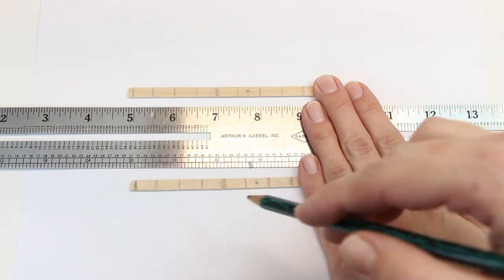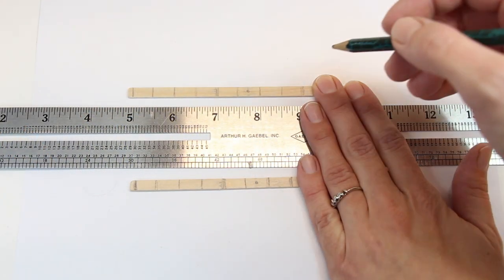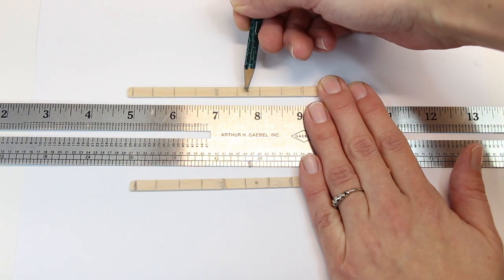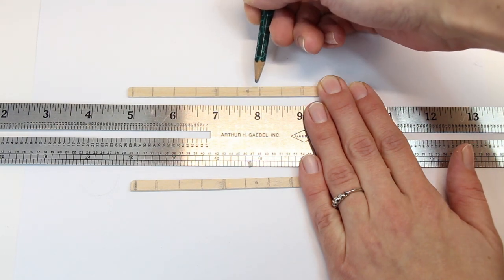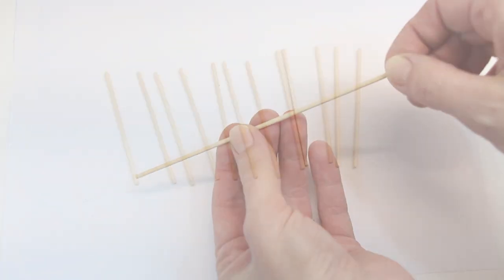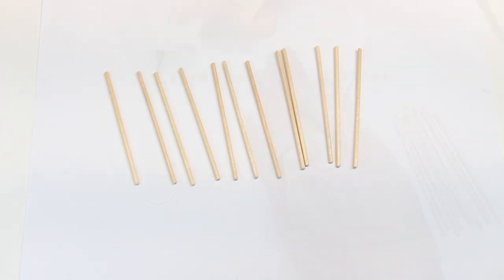To start, take two skinny sticks and mark them every four eighths moving out from the center. Next, cut six skinny round dowels in half. They should be three inches long.